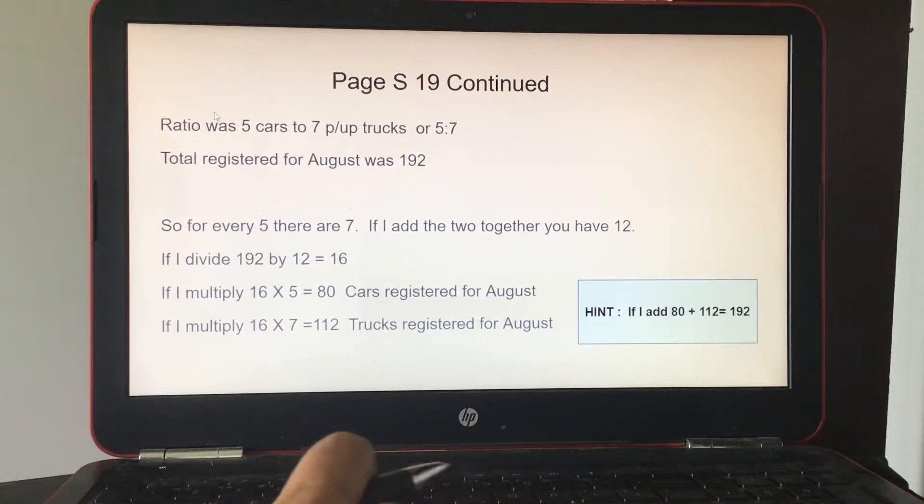Okay, so the ratio was 5 cars to 7 pickup trucks, or 5 to 7. The total registered for August was 192. So for every 5, there were 7. If I add the two numbers together, 5 plus 7, you would get 12. And then I would divide 192 by 12, and I would get 16.